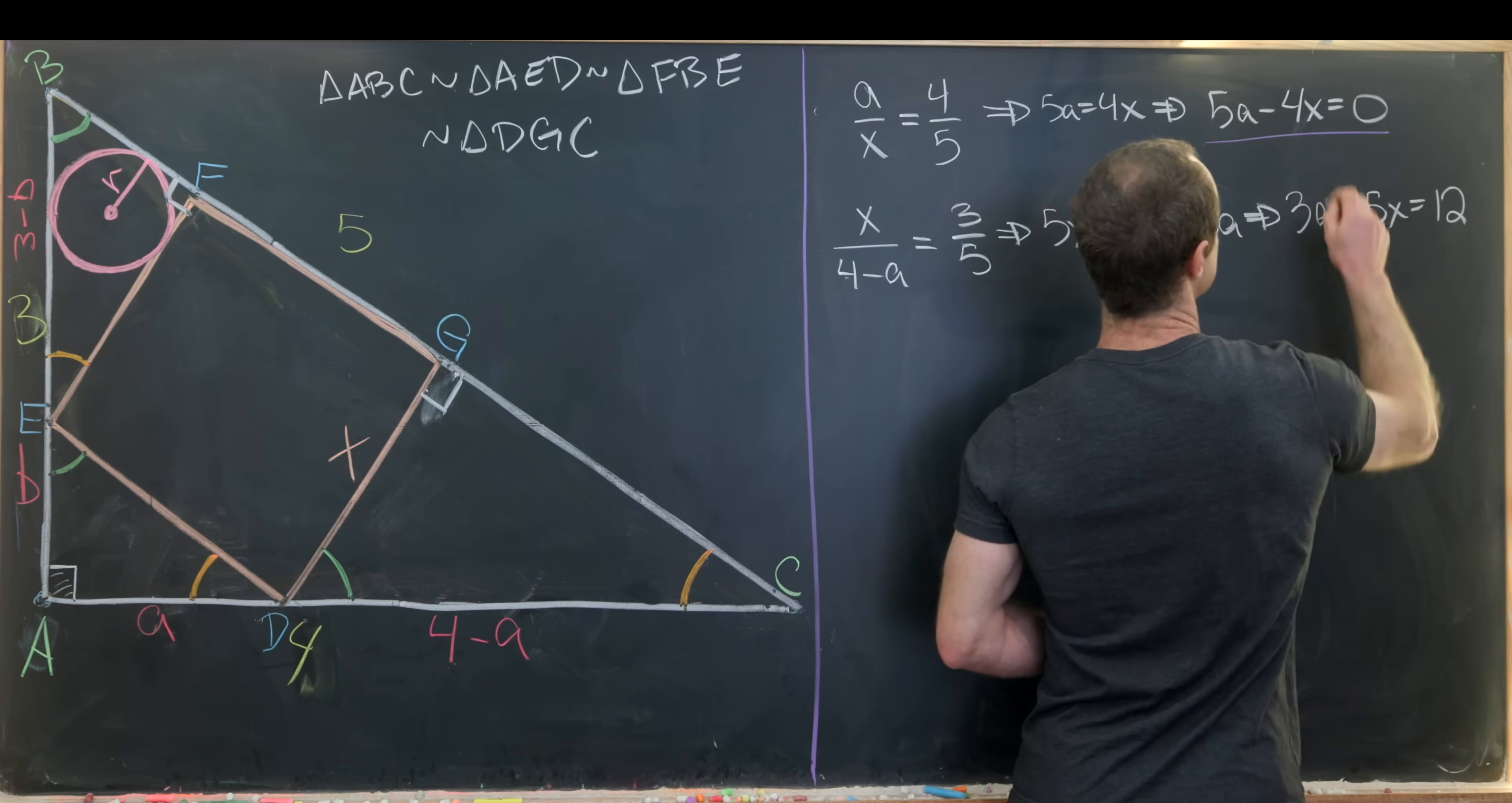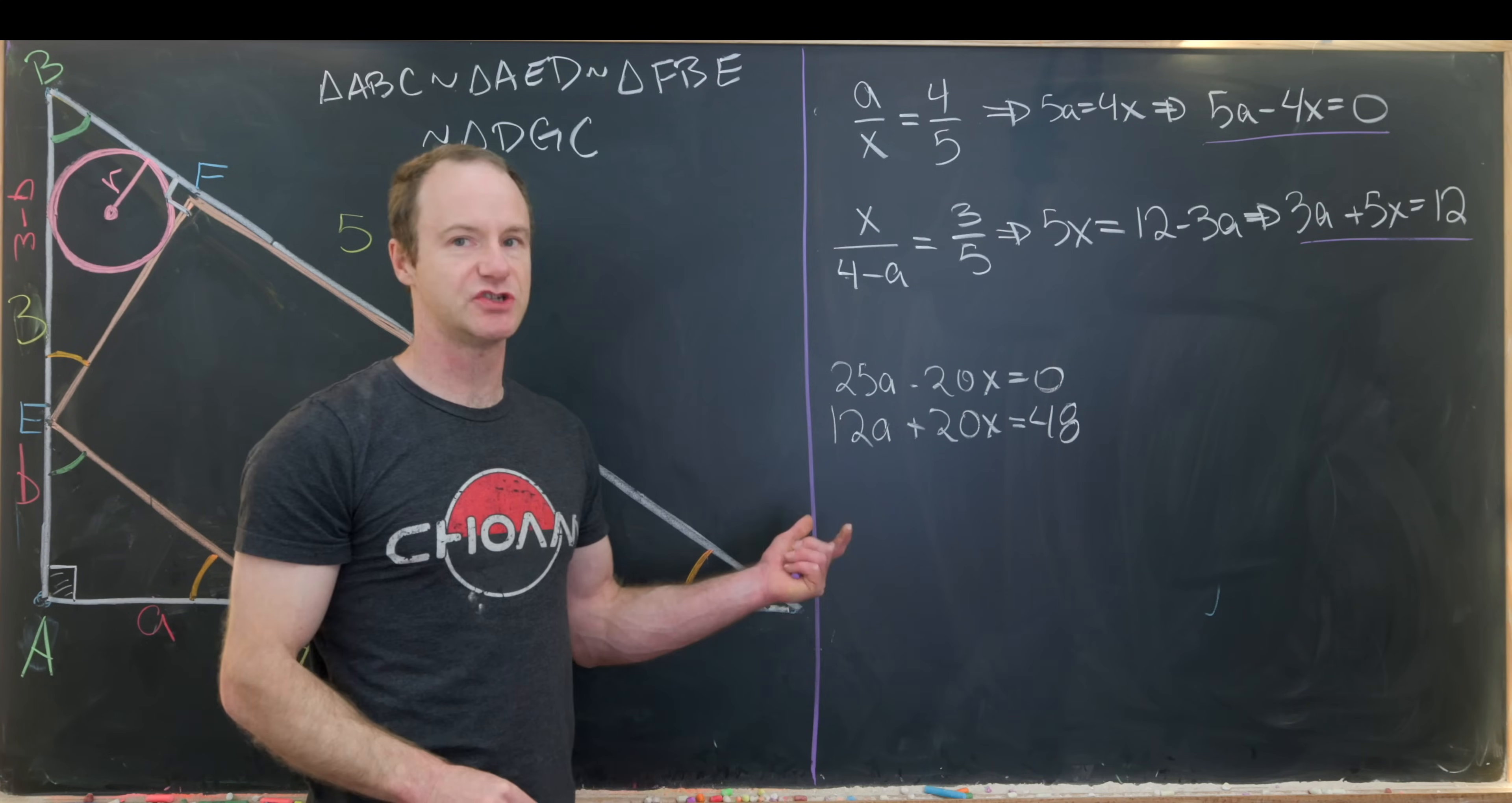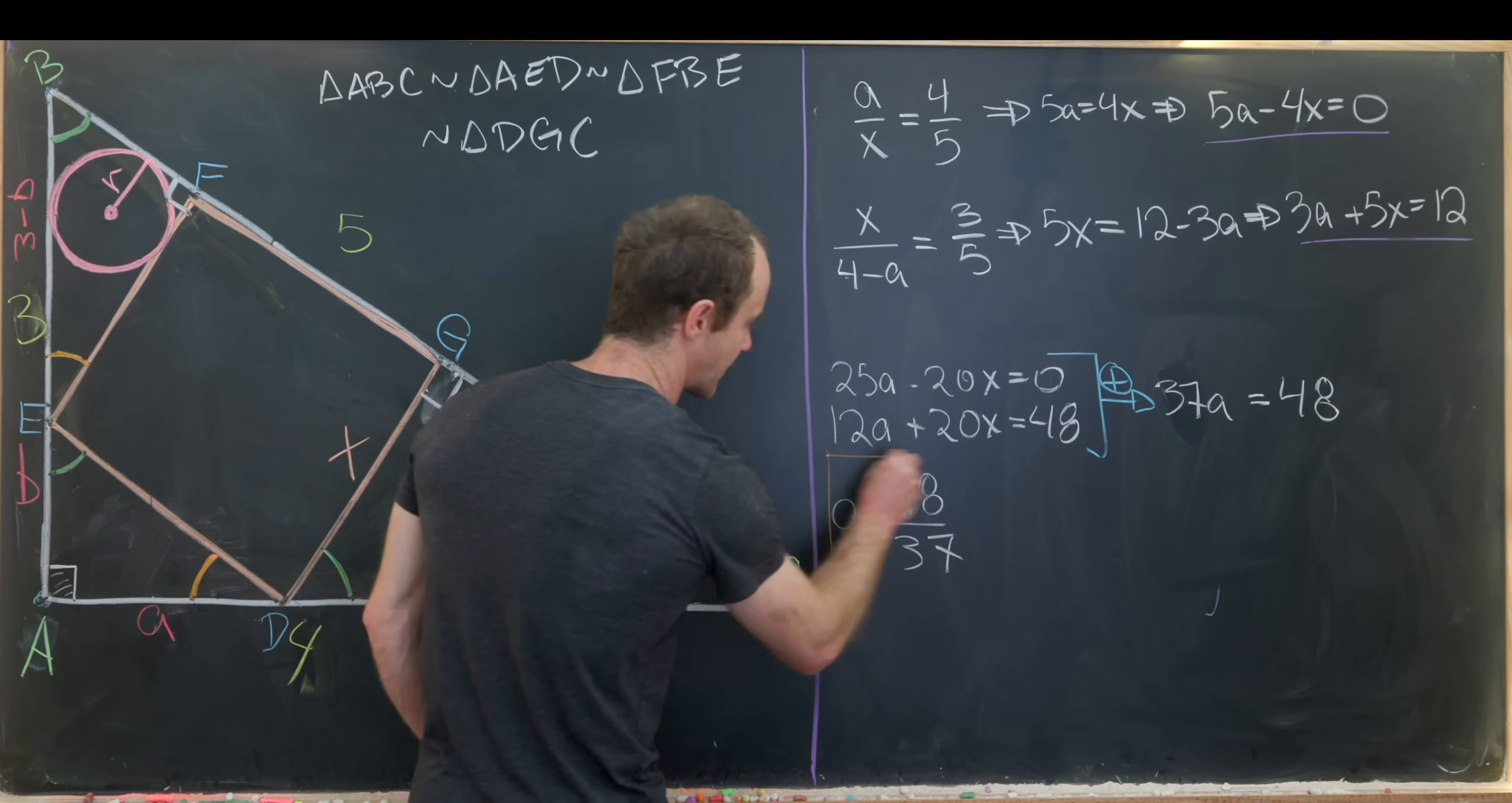And that gives us a system of two equations and two unknowns to solve for both a and x. So let's do that. Maybe the first thing I'd like to do is multiply this first equation by 5. So that's going to give me 25a minus 20x equals 0. And then I'll multiply the second equation by 4. So that gives me 12a plus 20x equals 48. You might say, well, why did I choose 5 and 4? Well, I did that so the coefficients of x would be the same. Now I can add these two equations. And notice if I add these two equations, the x's disappear. And then we'll end up with 37a equals 48. That tells us that a is equal to 48 over 37.